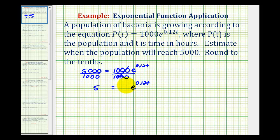Now because we have base e here, let's take the natural log of both sides of the equation. We can then apply the power property of logarithms and move this exponent of 0.12t to the front of the natural logarithm.